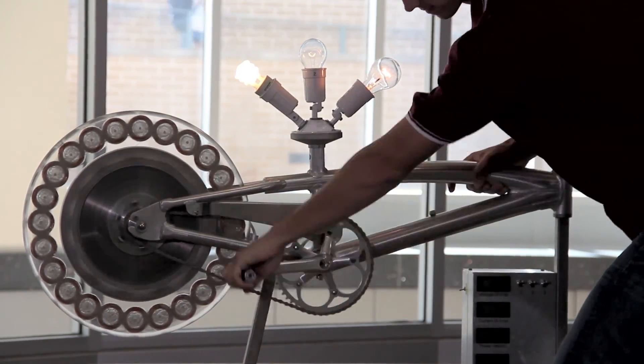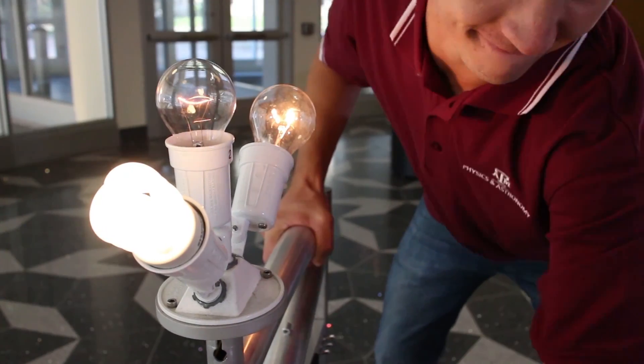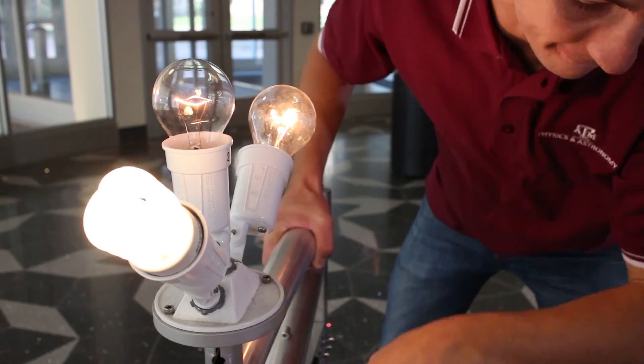In real power generating plants, it's water, steam, or wind which rotates the magnets. It was only a matter of generating enough current to activate all of these bulbs.